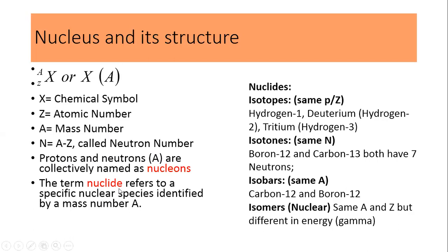Another term we will use is nuclide, instead of element or atom. A nuclide refers to a specific nuclear species identified by a mass number A. It is better to use the term nuclide instead of element when studying different concepts of the nucleus in nuclear chemistry.